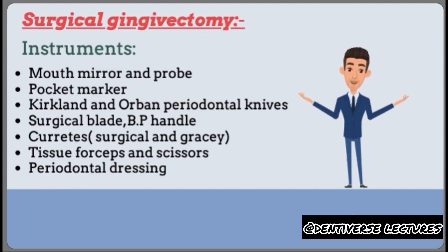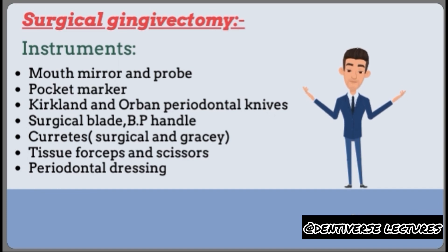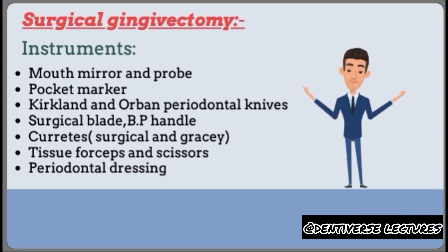Instruments used in surgical gingivectomy include: mouth mirror and probe, pocket marker, Kirkland and Orban periodontal knives, surgical blade and BP handle, curettes, tissue forceps and scissors, and periodontal dressing.